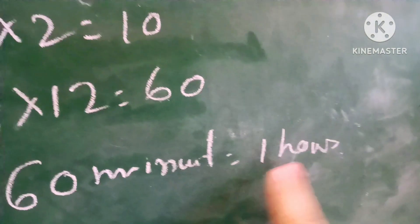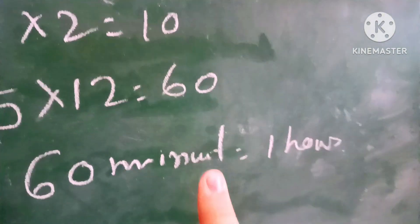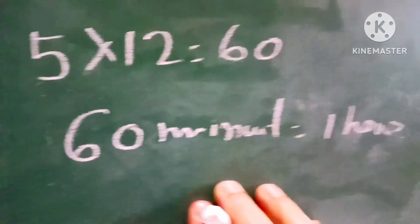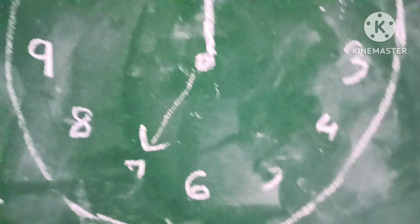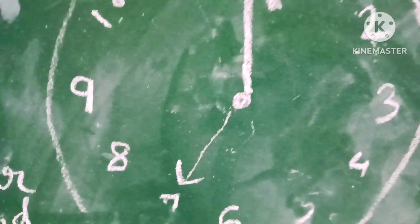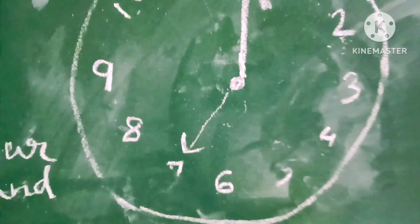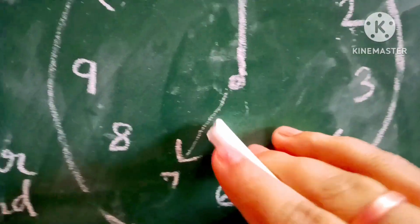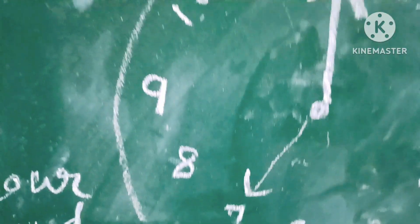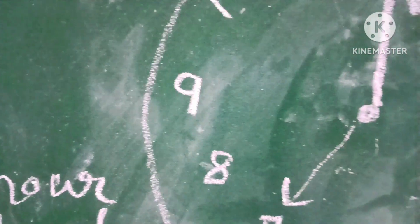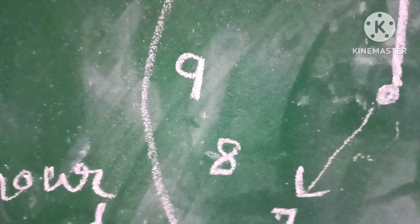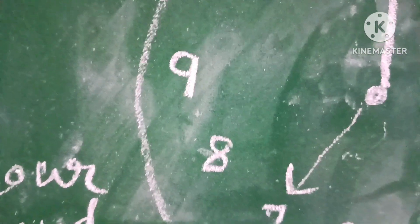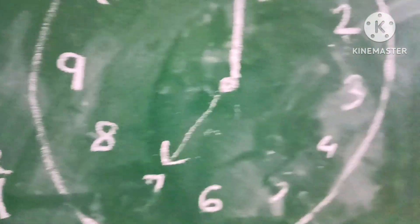So 60 minutes equals 1 hour. When the hour hand moves from one number to the next number, that is 1 hour.